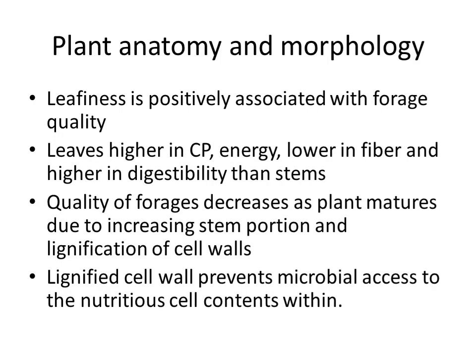The next factor affecting nutritive value is plant anatomy and morphology. Leafiness is positively associated with forage quality — leaves are higher in crude protein and energy, lower in fiber, and higher in digestibility than stems. The quality of forages decreases as the plant matures due to increasing stem portion and lignification of cell walls. Lignified cell walls prevent microbial access to nutritious cell contents within.